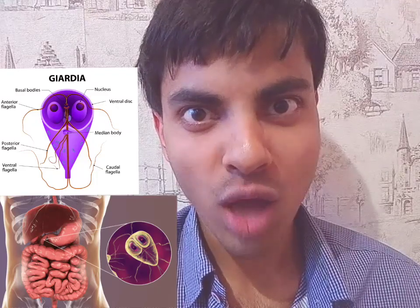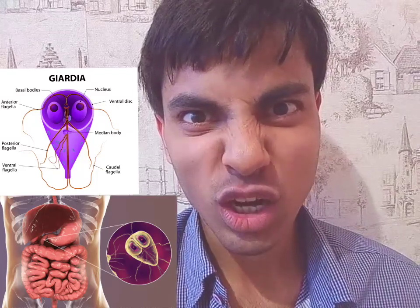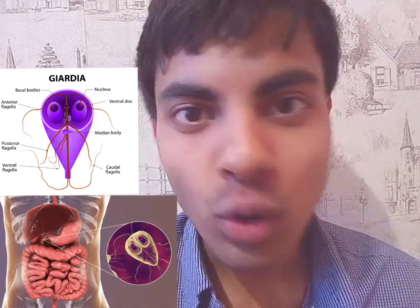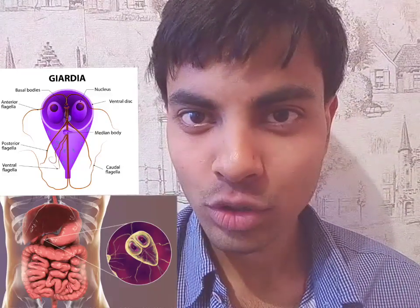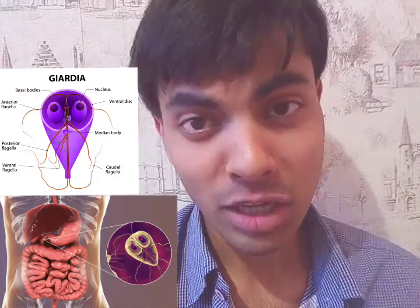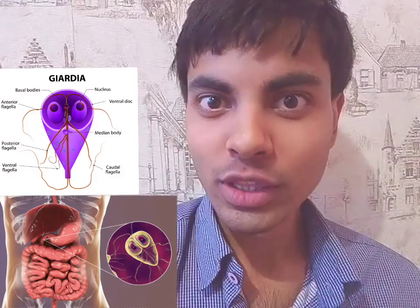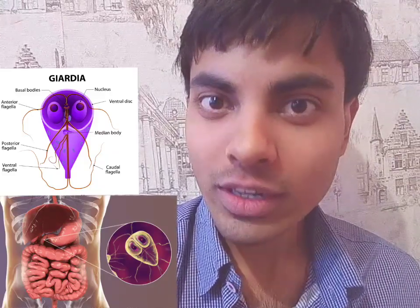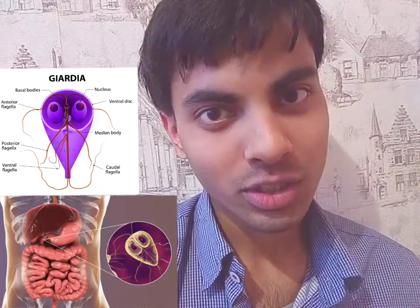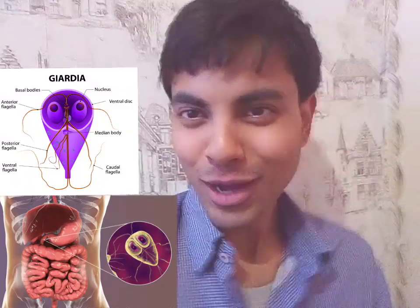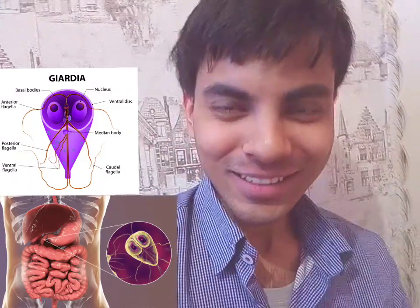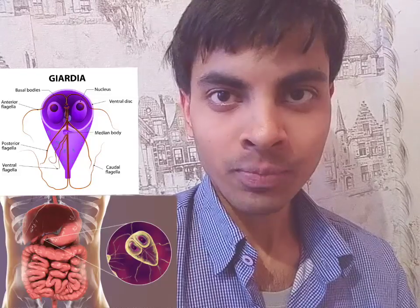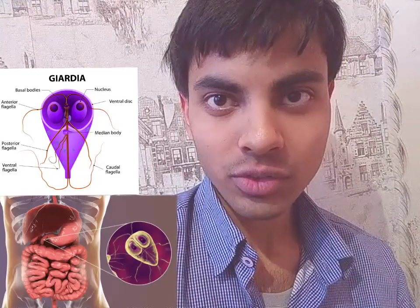So Lamblia intestinalis, as it very clearly moves in the intestines - specifically duodenum, which is small intestine. The first part of the small intestine is duodenum, that's where Lamblia intestinalis lives.